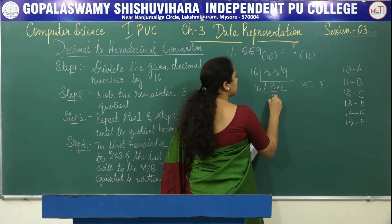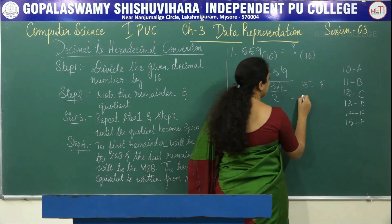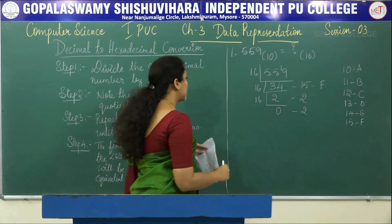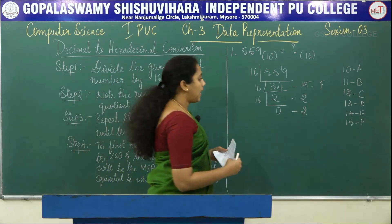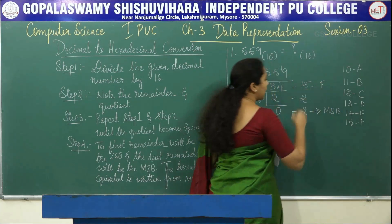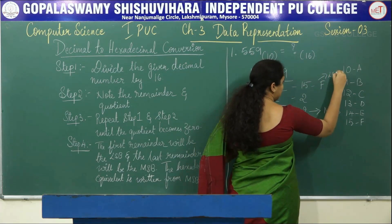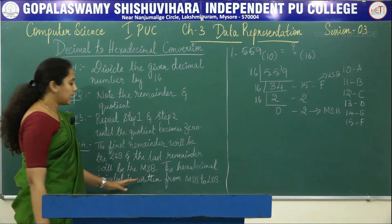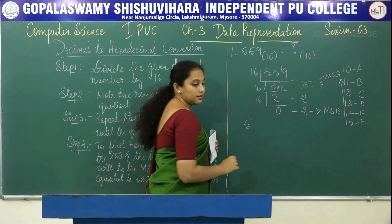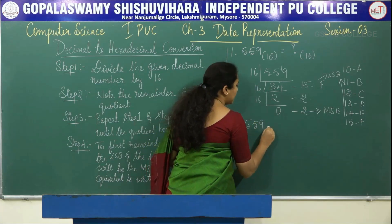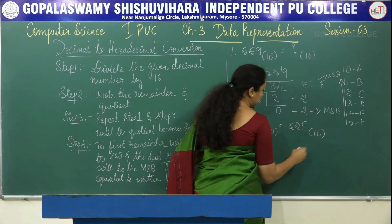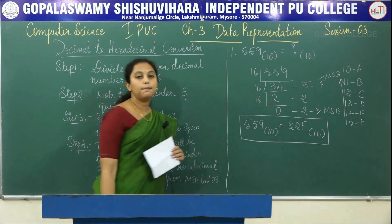Next, 16 times 2 is 32, so the remainder is 2. Then 16 times 0 is 0, and 2 is the remainder. Now we mark down the LSB and MSB. The last remainder is the MSB and the first remainder is the LSB. The hexadecimal equivalent is written from MSB to LSB, so the hexadecimal equivalent of 559 base 10 is equal to 22F base 16.